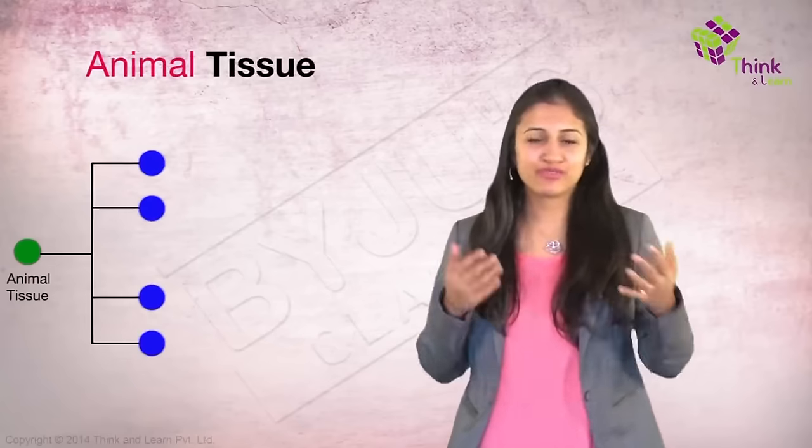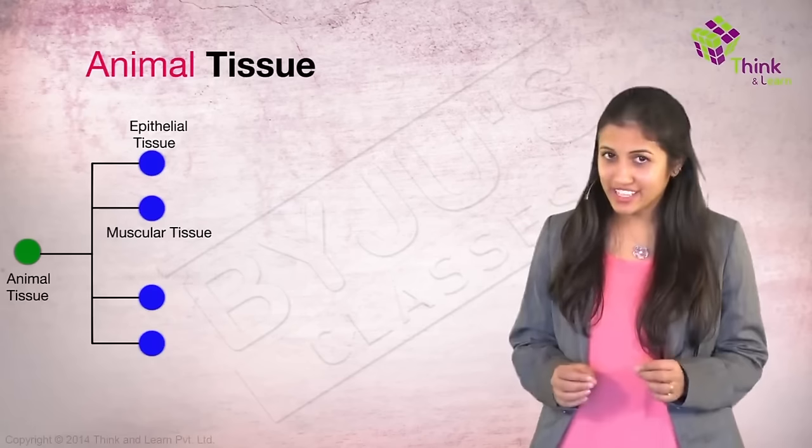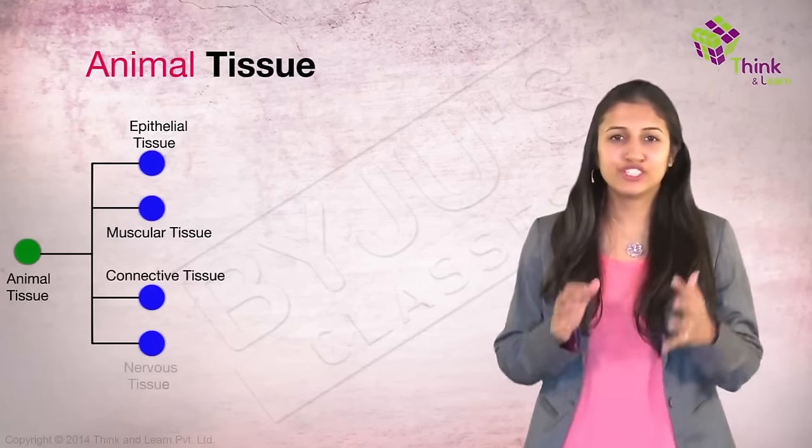Although we animals are such a bunch of complicated creatures, we are basically made up of just four types of tissue: epithelial tissue, muscular tissue, connective tissue, and nervous tissue.